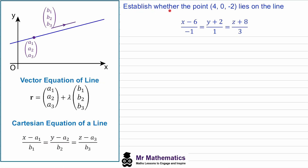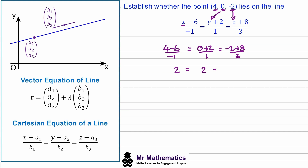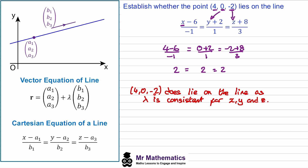Finally, we've been asked to establish whether the point (4, 0, −2) lies on this line — you may want to pause and try this yourself. Substituting x = 4, y = 0, and z = −2 into the Cartesian equation: we get −2 ÷ (−1) = 2, then 2 ÷ 1 = 2, and 6 ÷ 3 = 2. Since λ is consistent for x, y, and z, the point (4, 0, −2) does lie on the line.